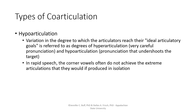Another type of co-articulation is referred to as hypoarticulation. In hypoarticulation, there is variation in how much articulators reach that ideal articulatory target. We can have very careful and precise speech, which is referred to as hyperarticulation. Most speech, especially in a casual conversation, would have hypoarticulation, where pronunciations undershoot the articulatory targets. For example, when one is speaking fairly quickly, the corner vowels often don't make it all the way to their corner vowel articulations, and consequently this affects the formant frequencies that you get.